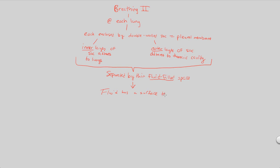This fluid itself has what is known as surface tension. This allows the fluid to essentially cause the two layers to stick together. It causes both the outer layer and the inner layer of the pleural membrane to stick together.